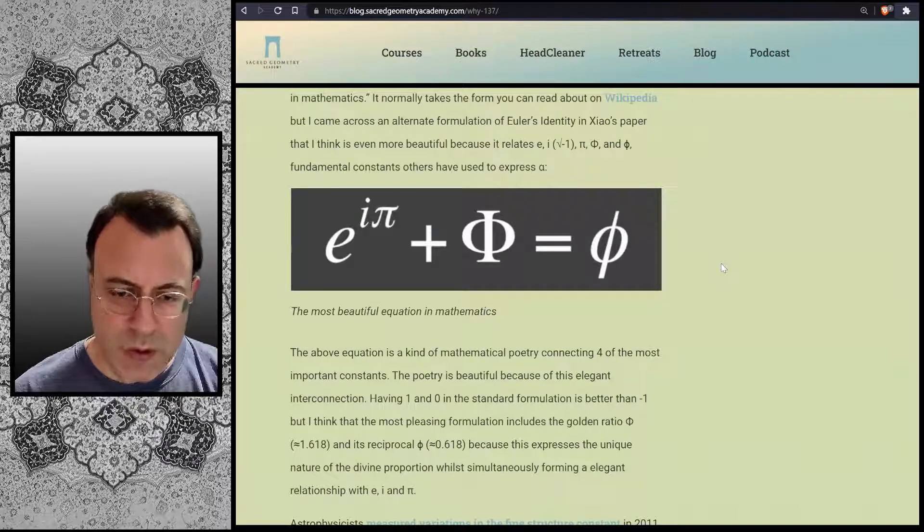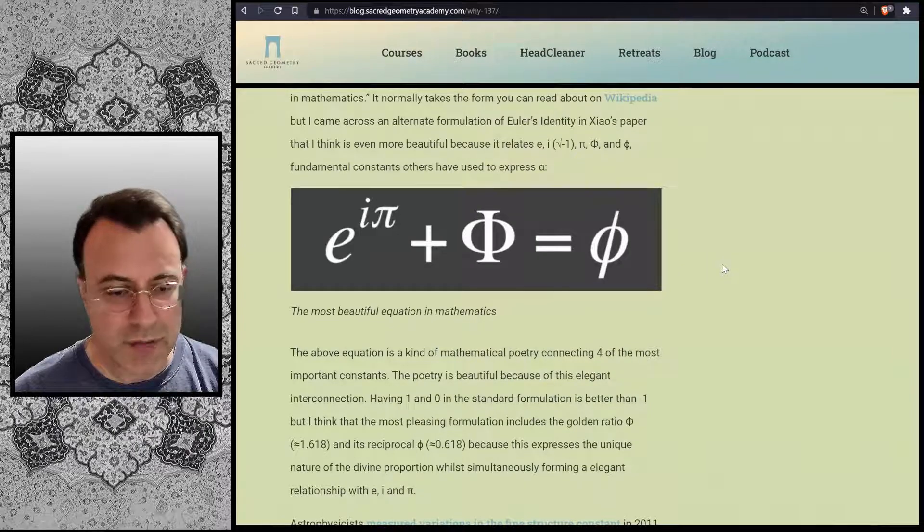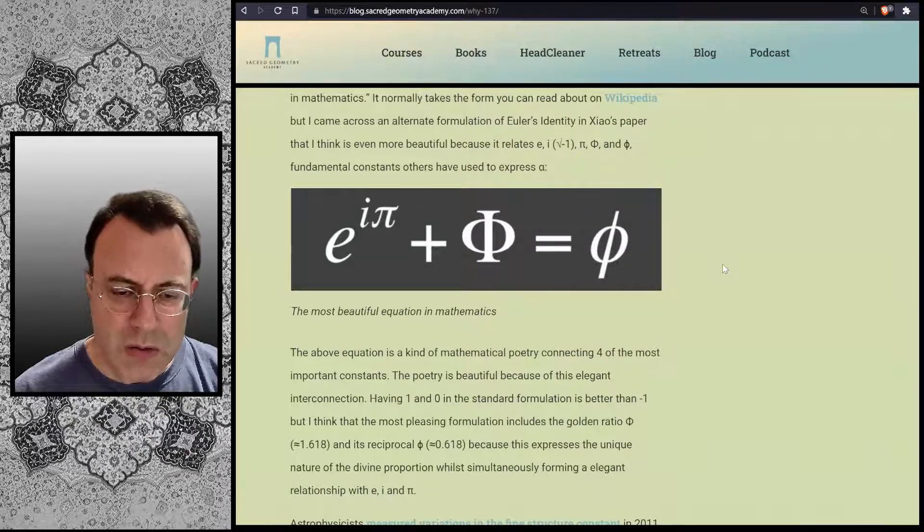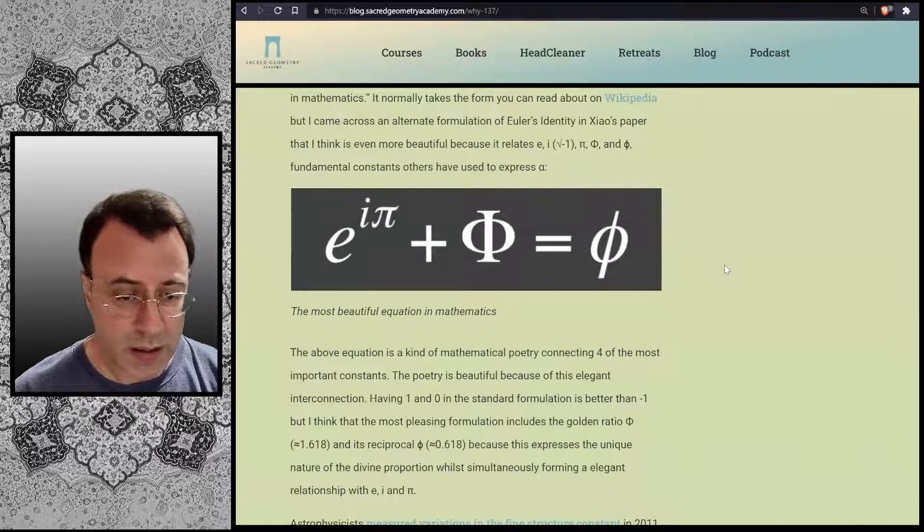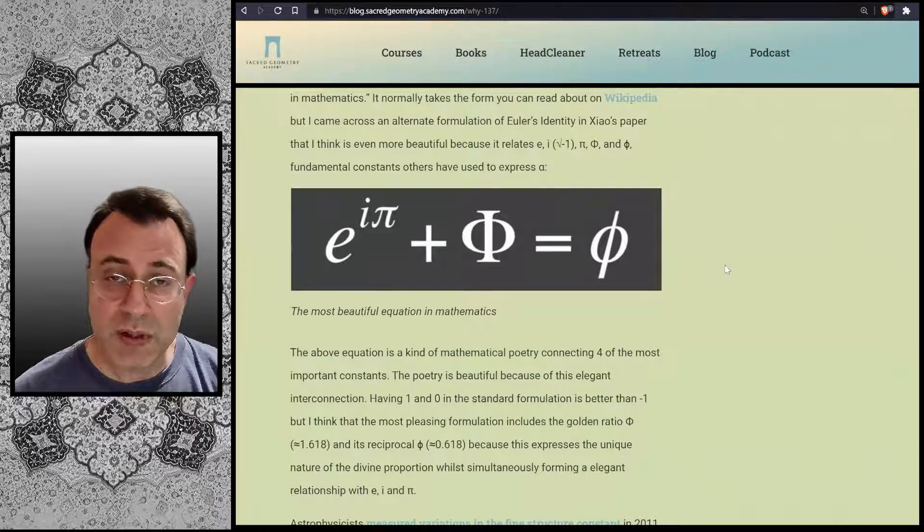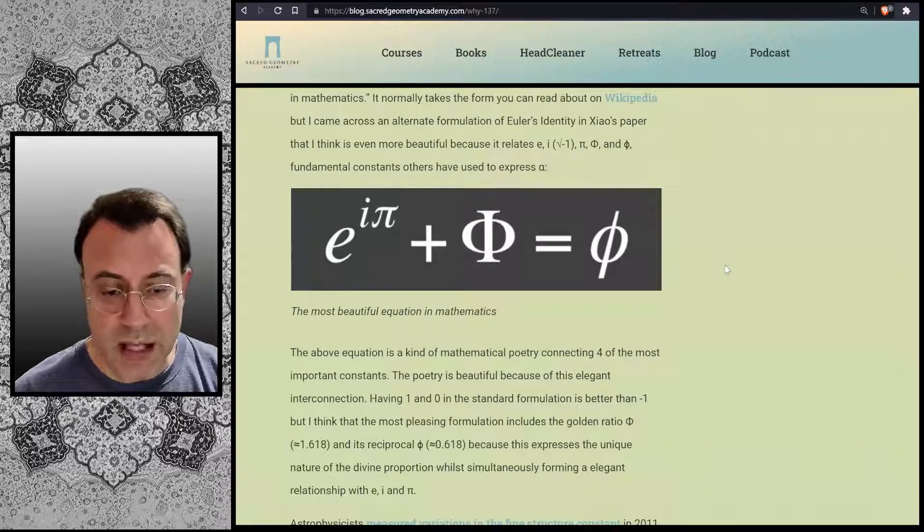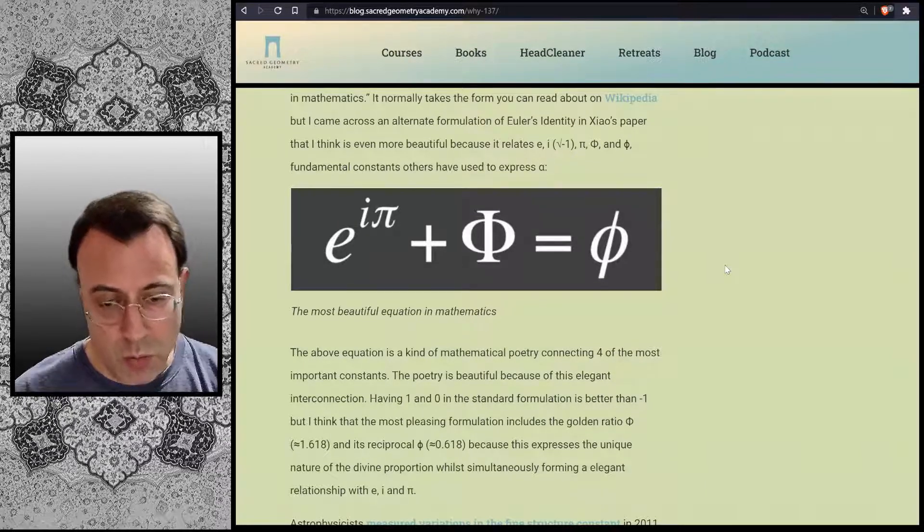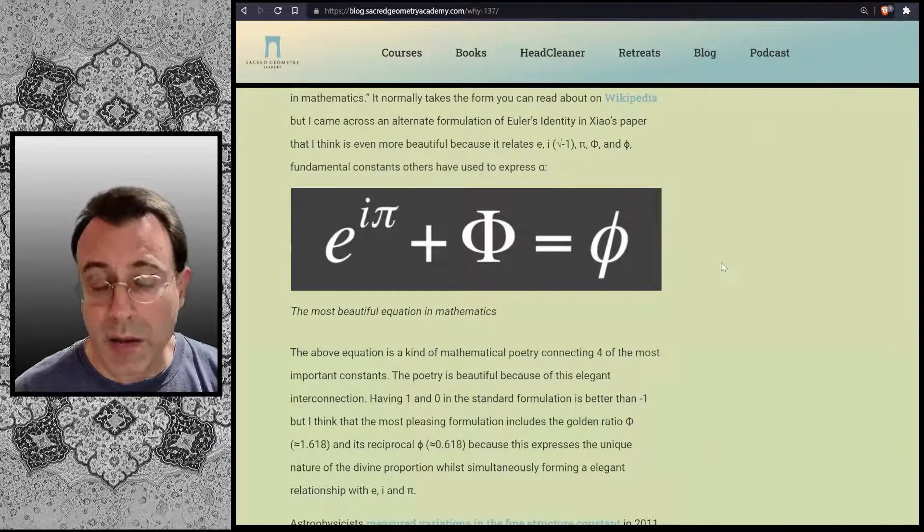The above equation is a kind of mathematical poetry connecting four of the most important constants. The poetry is beautiful because of this elegant interconnection. Having 1 and 0 in the standard formulation is better than negative 1, but I think that the most pleasing formulation includes the golden ratio, phi, which is 1.618 approximately, and its reciprocal, lowercase phi, which is approximately 0.618, because this expresses the unique nature of the divine proportion, whilst simultaneously forming an elegant relationship with E, i, and pi.